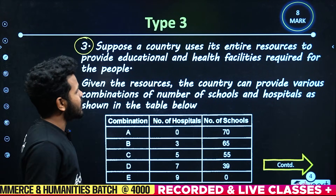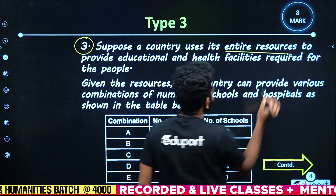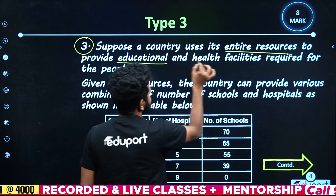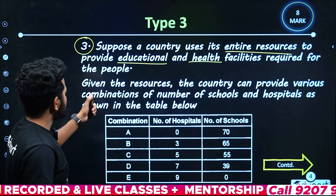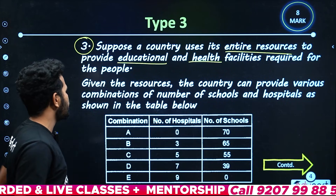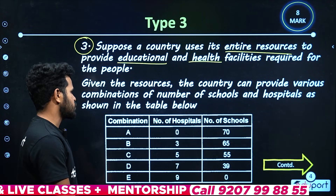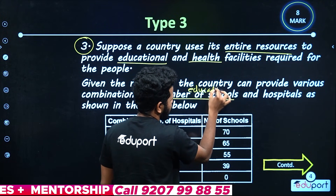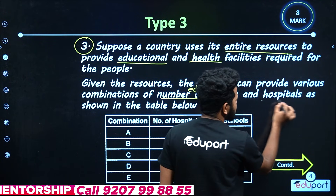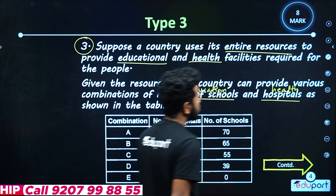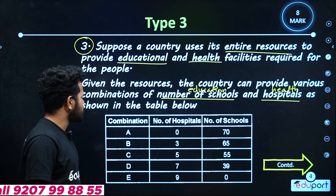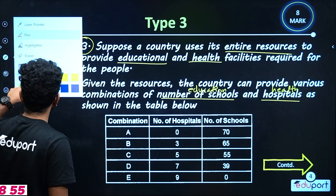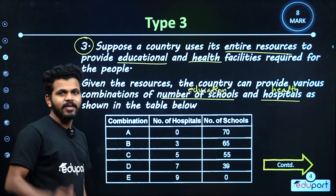Suppose a country uses its entire resources to provide education and health facilities. Given the resources, the country can provide various combinations of the number of schools and hospitals. In combination A, there are five points.